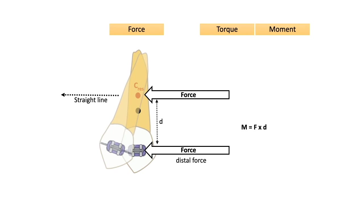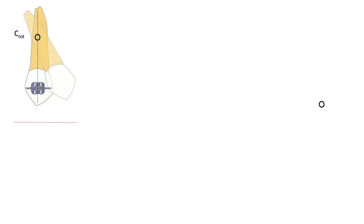The distal force produces a clockwise moment. For single-rooted teeth the center of rotation is most frequently located in the middle third of the root. The center of rotation is the key to defining the nature of tooth movement. When a single force is applied on a tooth, the tooth will move in the direction of the force applied; this type of tooth movement is called simple tipping or uncontrolled tipping.